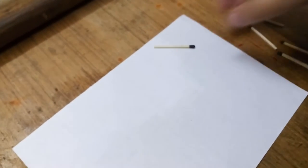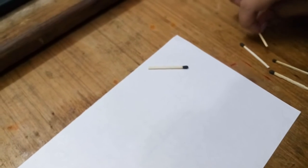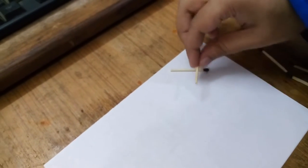Place five matchsticks to create a horse looking to the right, like this.